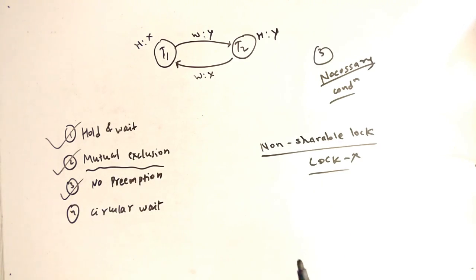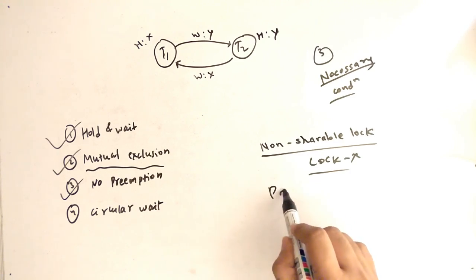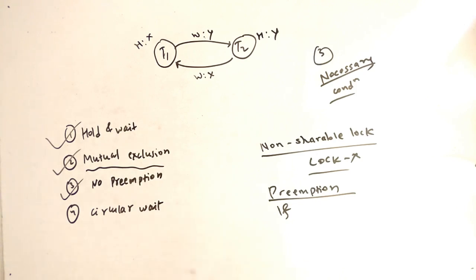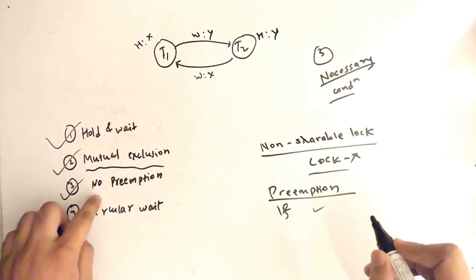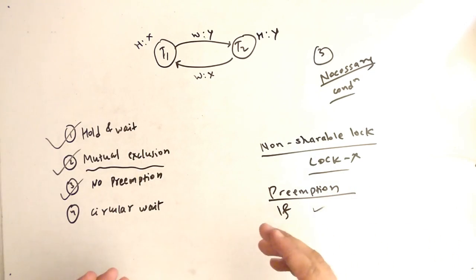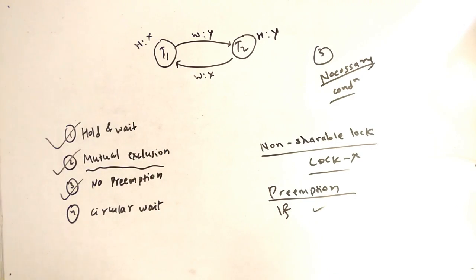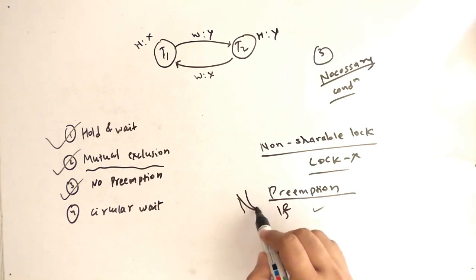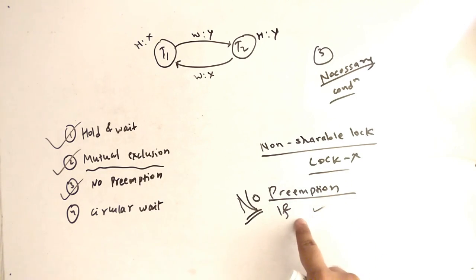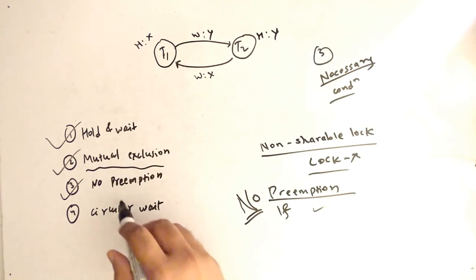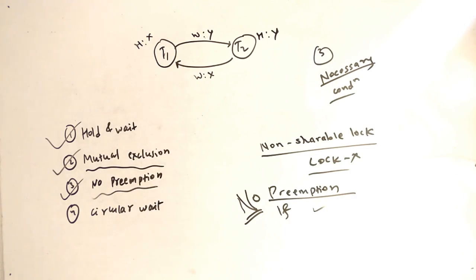The third condition is no preemption. Preemption means: if your work is completed, please release the lock. No preemption means T1 has completed its transaction but still holds resource X. So even though the transaction is done, it is still holding the lock. When no preemption occurs, we are again in a deadlock condition.